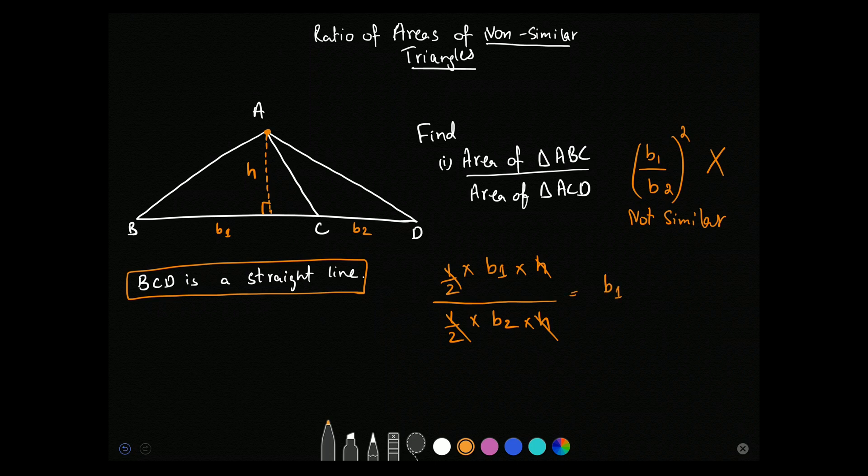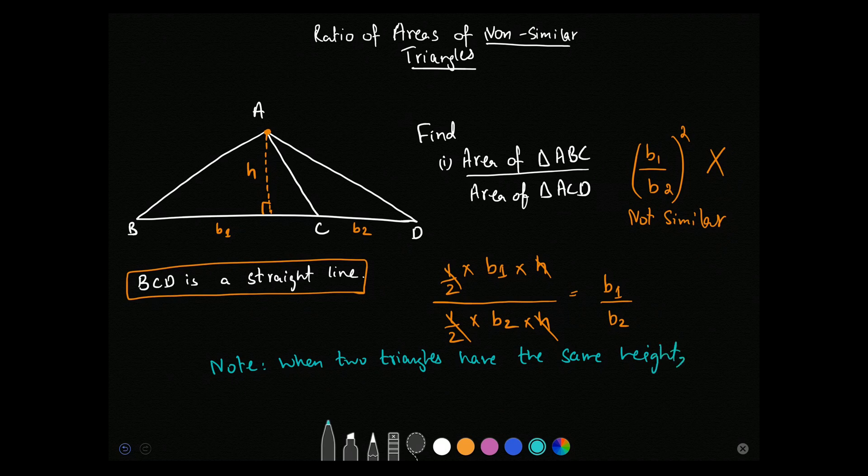What remains is B1 upon B2. Note that the base ratio is the area's ratio. And when will it happen? I will write a note so that you remember. When two triangles have the same height,